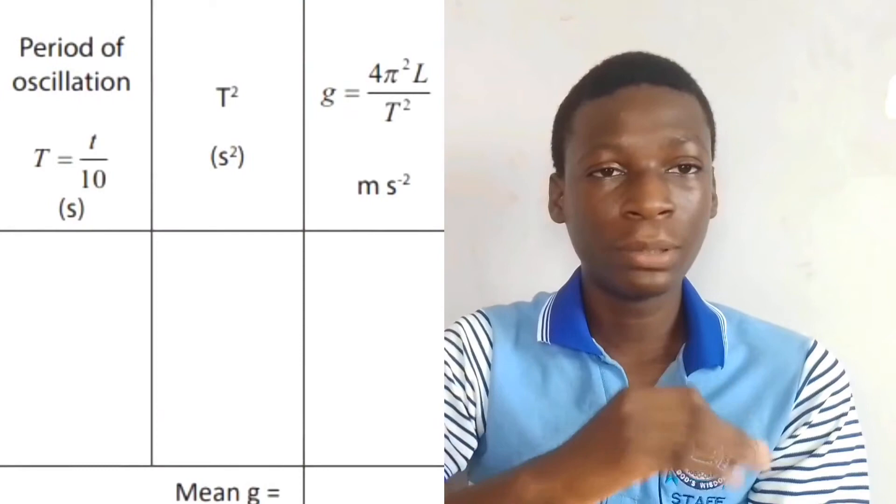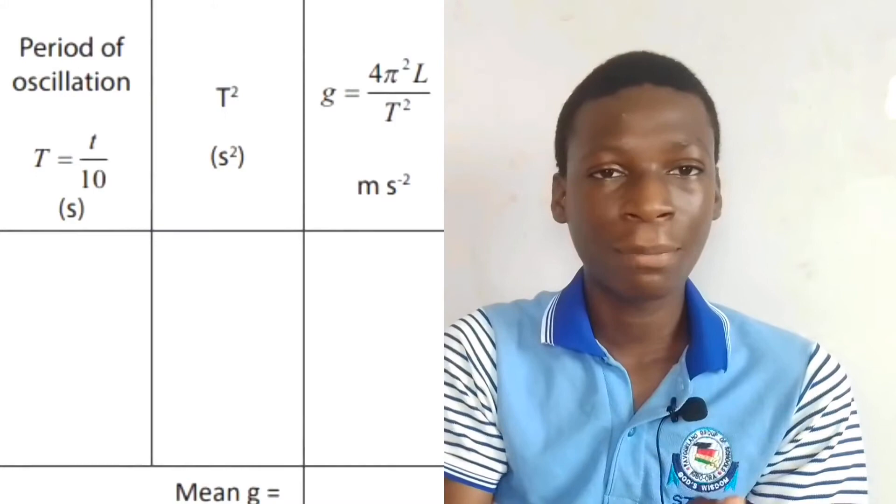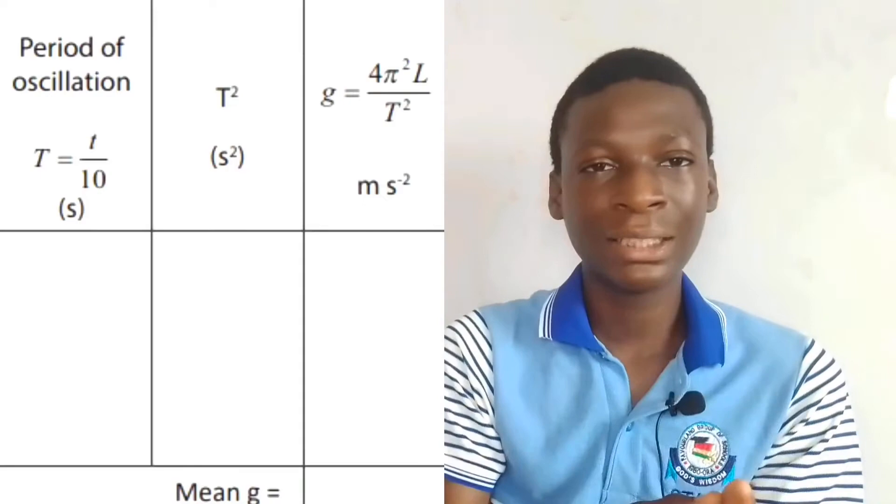Another thing to note in filling out the table of value is that you must follow the instructions step by step. In your question, you will be given the first step — you may be given a mass of a certain value. The first thing is your serial number. If you are given five steps, you will number one to five. Then you may be told in the question, for example, you are given a mass of so-and-so. You are going to write out the mass with its unit, which is grams, and you will write out all the masses given beside the serial number. Then the next thing follows the way your question is being asked.